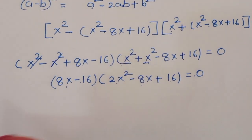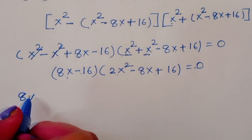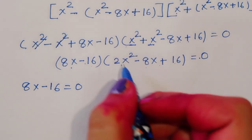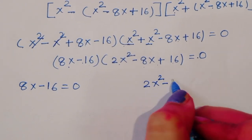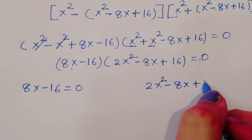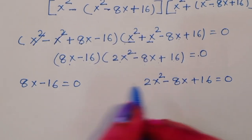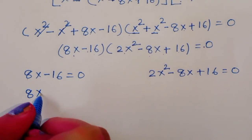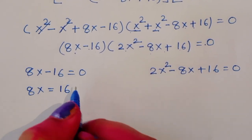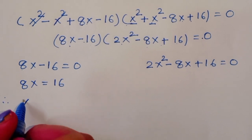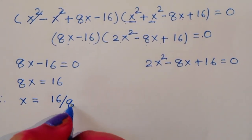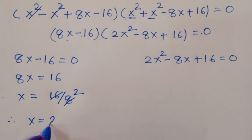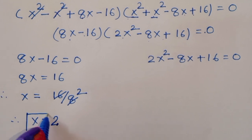Taking the first factor: 8x - 16 = 0, so 8x = 16, therefore x = 16/8 = 2. This is the first real value of x.